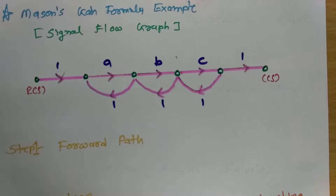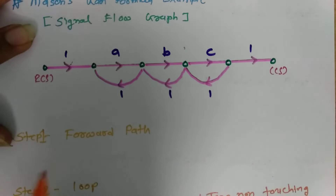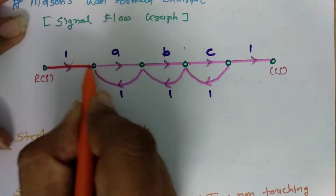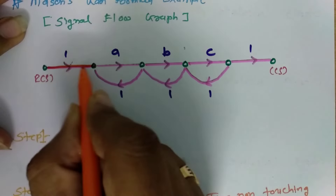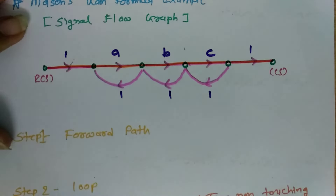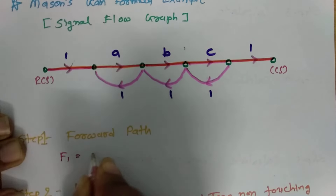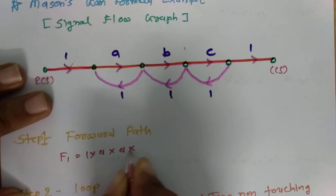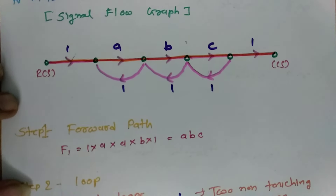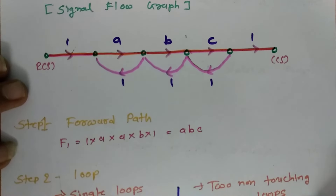Let us begin the solution of this example. The first step is to calculate the forward path. In this given signal flow graph, we can clearly see there is only one forward path. That forward path is F1 = 1 × A × B × C × 1, which equals ABC. There are no more forward paths in this transfer function.